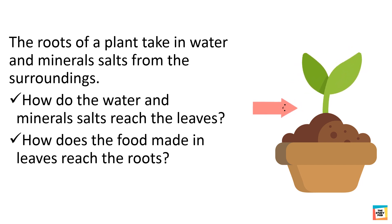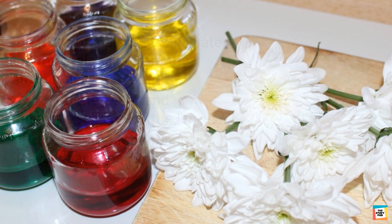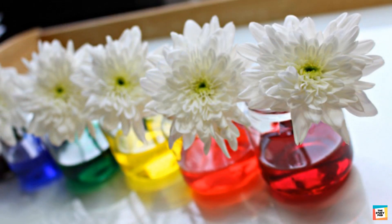To find out, we will do an experiment. This experiment will tell us the function of stem. Step one: Take some white flowers and a jar of colored water. You may use one color or as many different colors as you like. Step two: Place the flowers in the glass of colored water and leave them for a day.